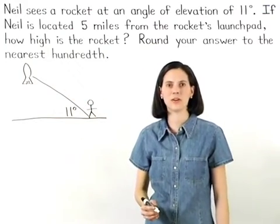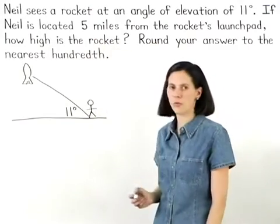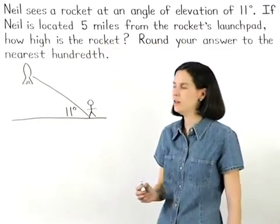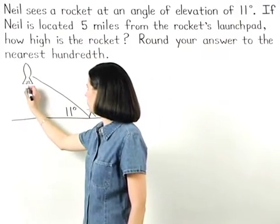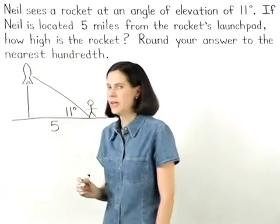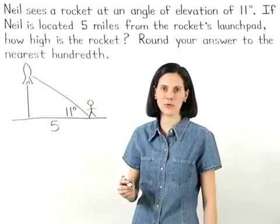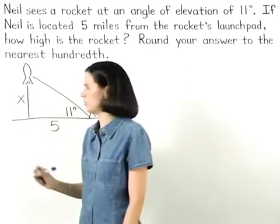Now to complete our picture, we're also given that Neil is 5 miles from the rocket's launch pad, so Neil is 5 miles from a point directly below the rocket. And we're asked to find the height of the rocket, so we can use x to represent its height.